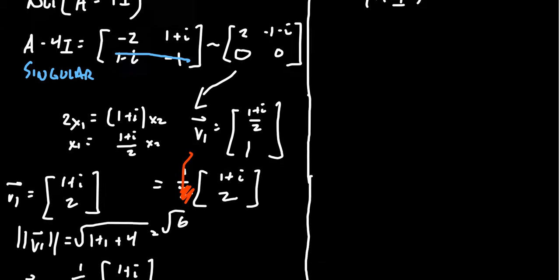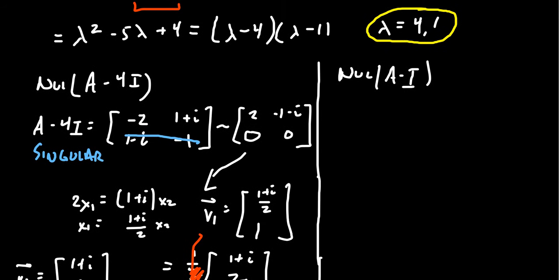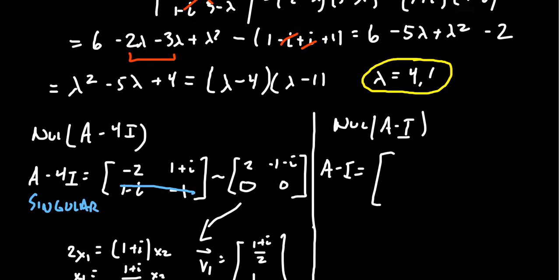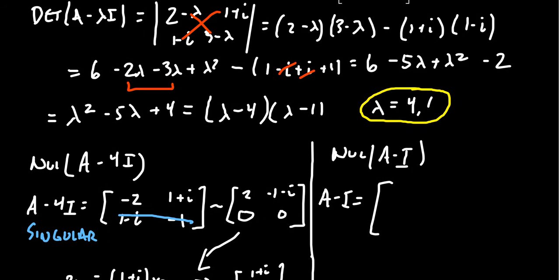Now repeat the process for eigenvalue 1. The matrix A − I gives entries: 2−1 = 1, (1+i), (1−i), and 3−1 = 2. You can always verify by plugging λ=1 back into the expression from the determinant computation. This is the matrix we want to row reduce.